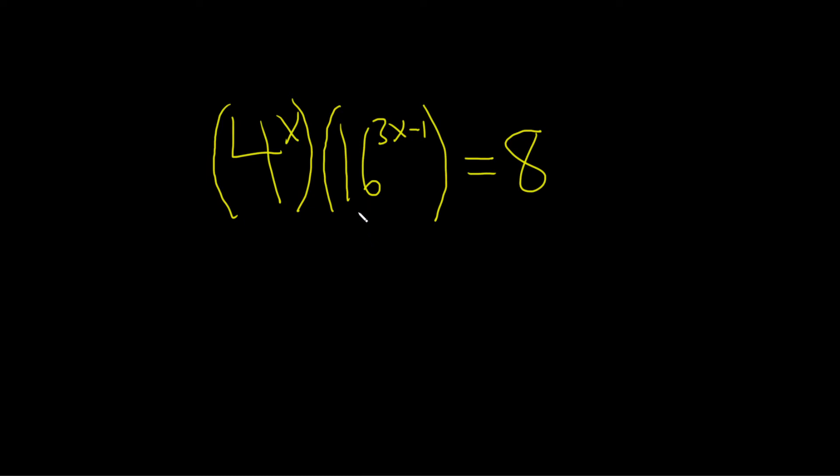In this problem, we have an exponential equation, and our goal is the following. It would be nice if we can write this as b to the x equals b to the y, where b is a number called the base, and it's the same on both sides. So if you do that, you just get x equals y.